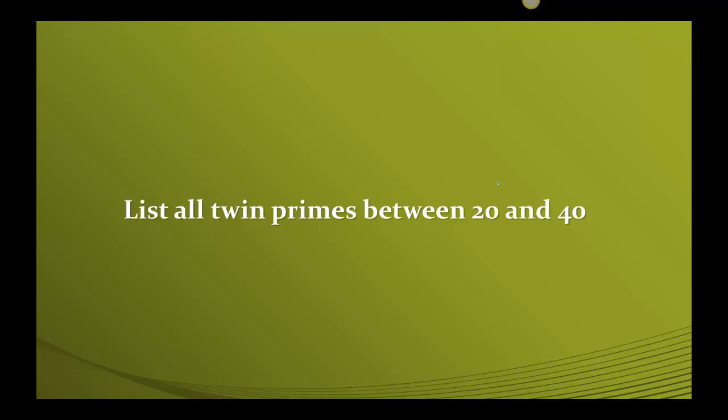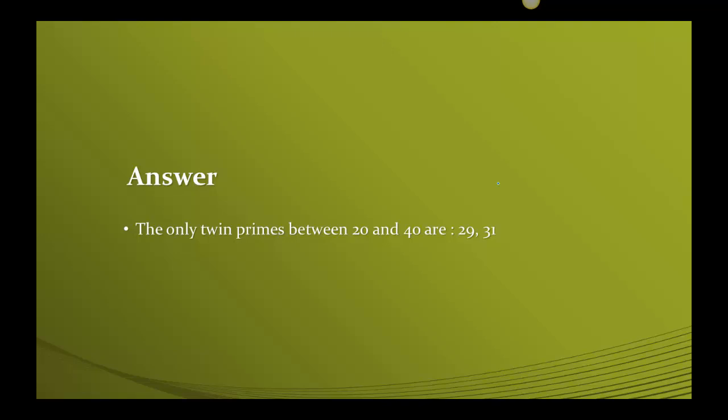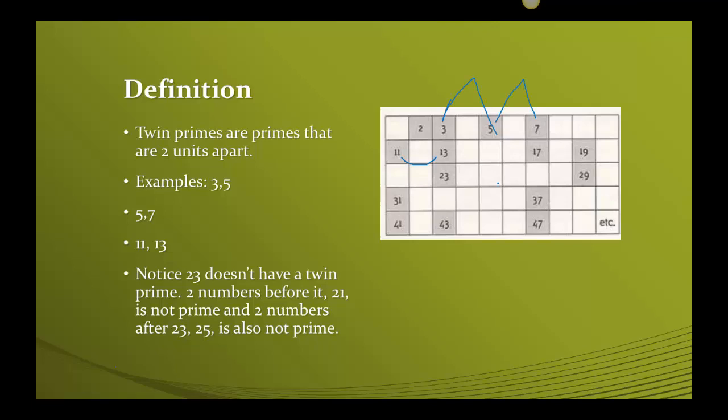I'm hoping you are sitting with your little sheet of paper that we had from last week, where it had all the prime numbers, so that you can look at it. That's how I would want you to do the homework and the test, where you're looking at the prime numbers and deciding what follows this particular definition. When you're looking at your chart, hopefully what you see between 20 and 40 are just the two numbers, 29 and 31.